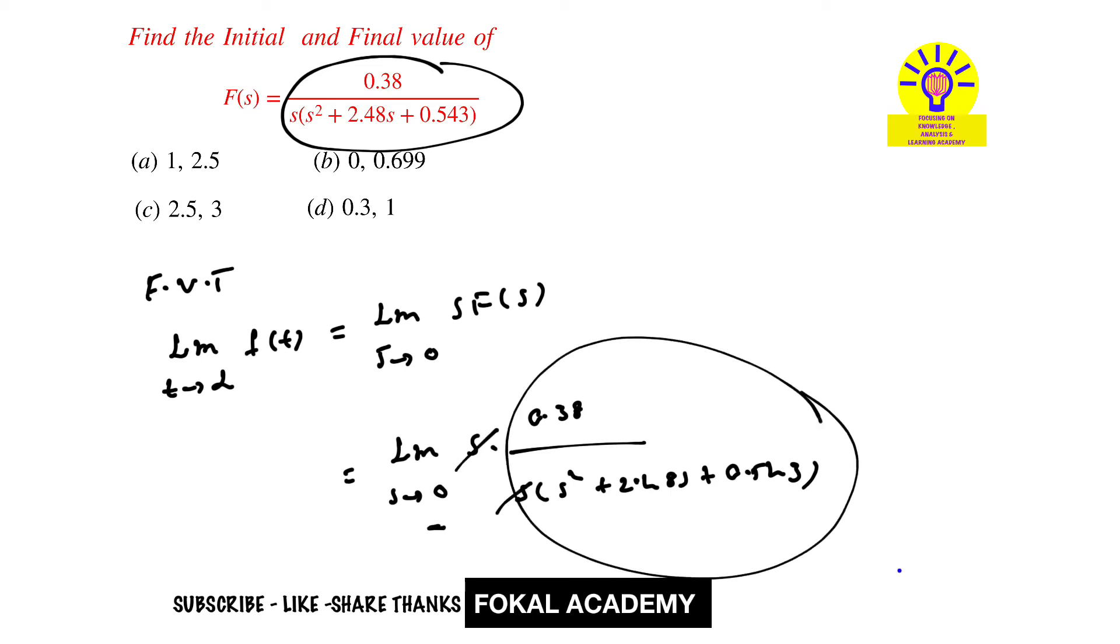we get 0.38/(0 + 0 + 0.543). Using a calculator, this equals 0.699, which is the final value for the F(s) function.